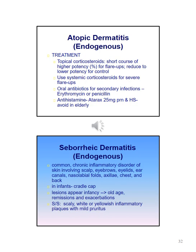Seborrheic dermatitis is a common chronic inflammatory disorder of the skin involving the scalp, eyebrows, eyelids, ear canals, nasal labial folds, axilla, chest, and back. In infants it's called cradle cap. Lesions can appear starting in infancy through elderly age with remissions and exacerbations. Signs and symptoms include scaly white or yellowish inflammatory plaques with mild pruritus.